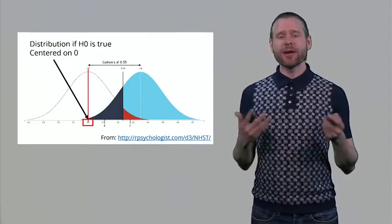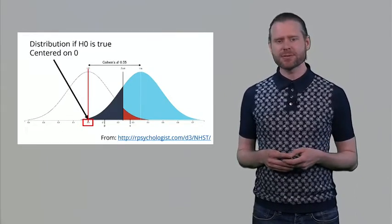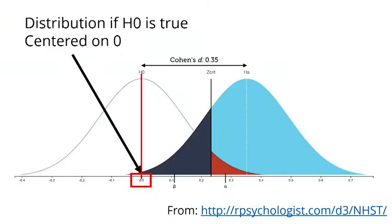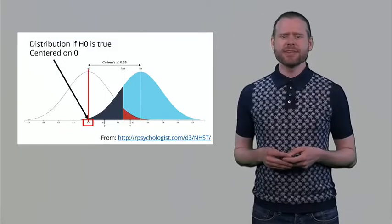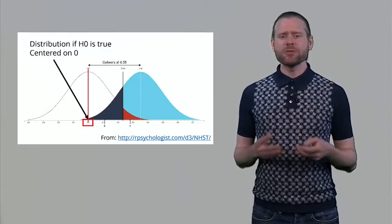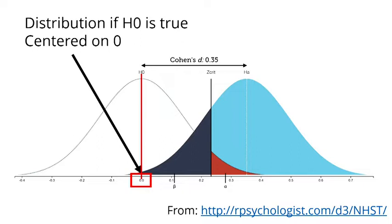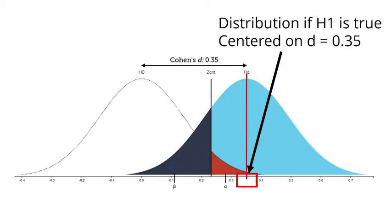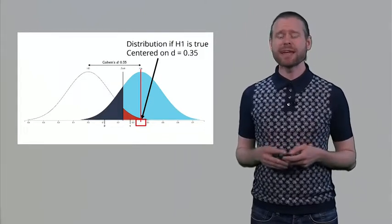Now let's use a slightly different way to think about these type 1 errors and type 2 errors and true positives and true negatives. This is an illustration of the null hypothesis and the alternative hypothesis in terms of normal distributions. You can visit this website and play around with this visualization if you want to. Let's look at all the different components because there is quite a lot of information. The white bell-shaped curve is the situation when the null hypothesis is true, when there is no true effect to be observed. You can see that it is centered at zero. The light blue bell-shaped curve is the distribution when there is a true effect, in this case a true effect of a specific size, namely 0.35.